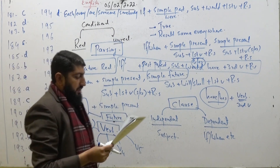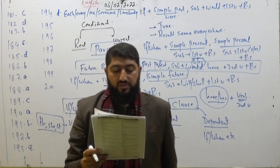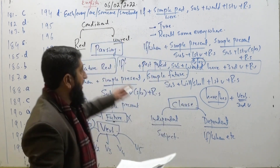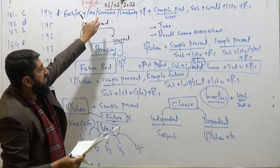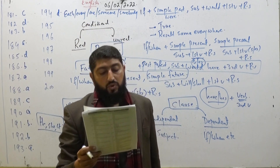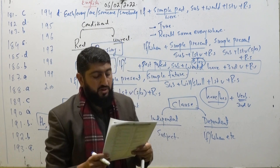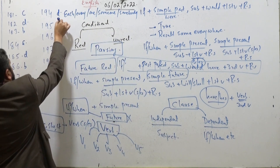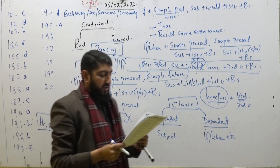MCQ 195: 'Each of the boys has passed the entrance test.' As I listed — each, everyone, someone, somebody, anyone — after these the verb will be singular. Option number A — 'has' — is the correct one.